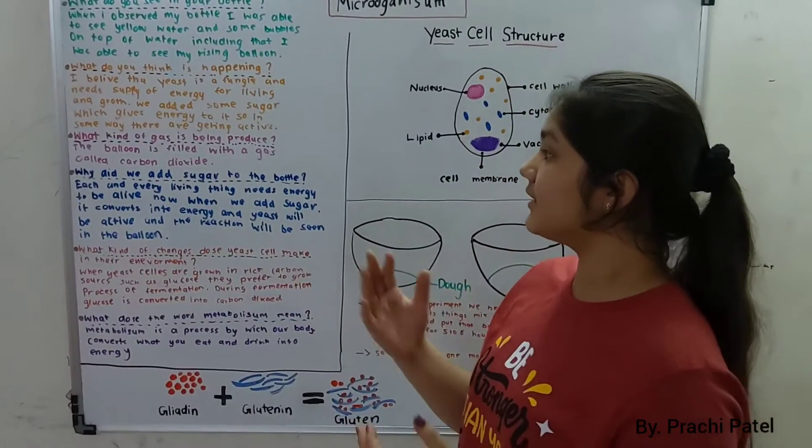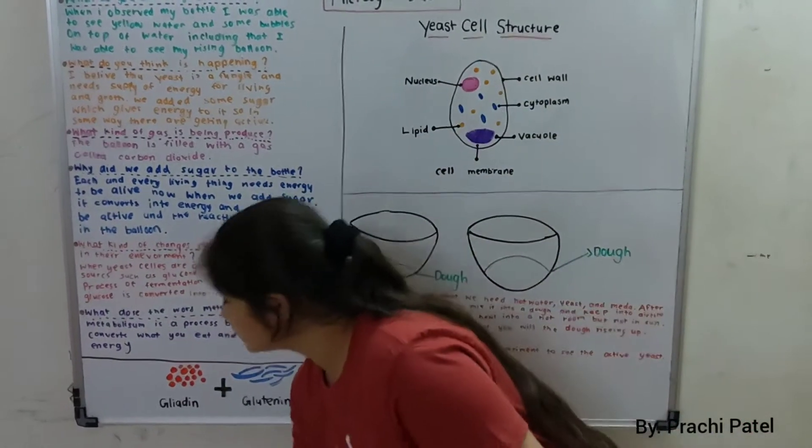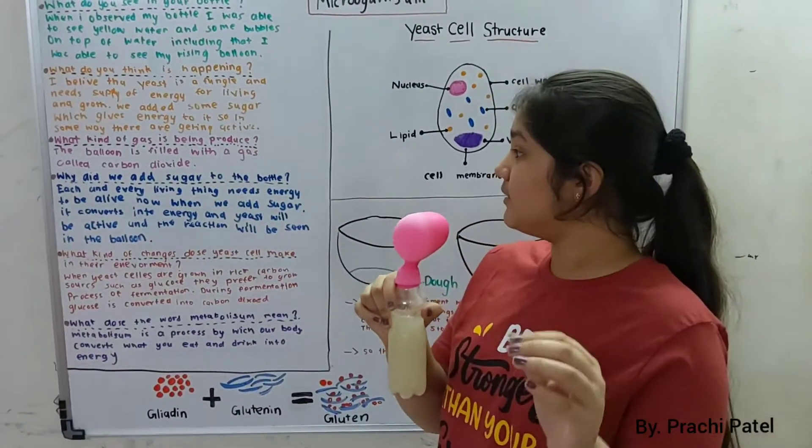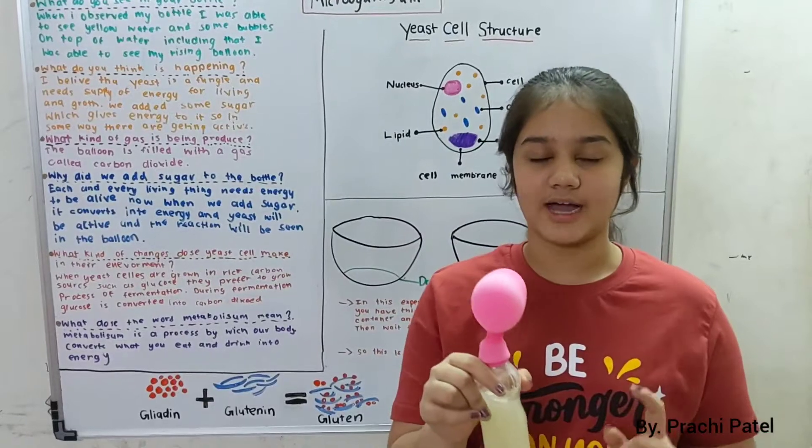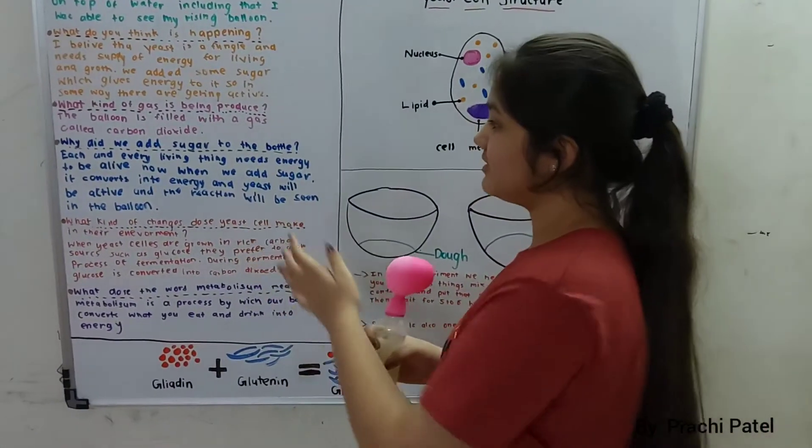Now, what kind of gas is being produced? There is some type of gas in this balloon. The balloon is filled with a gas called carbon dioxide. Third, we can go to the next question.